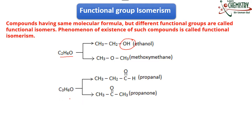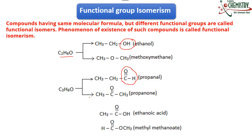Another example: both have the same molecular formula C3H6O. The first compound is an aldehyde, and in the second the carbonyl carbon is surrounded by two alkyl groups, making it a ketone. There is a difference of functional group but the molecular formula is the same. Also, carboxylic acid and ester — both with two carbons, four hydrogens, and two oxygens — are another example of functional group isomerism.